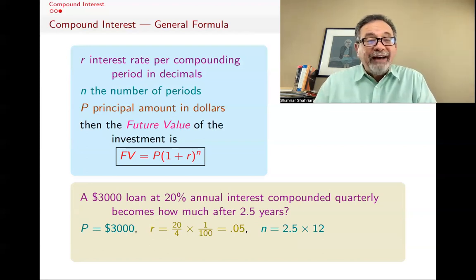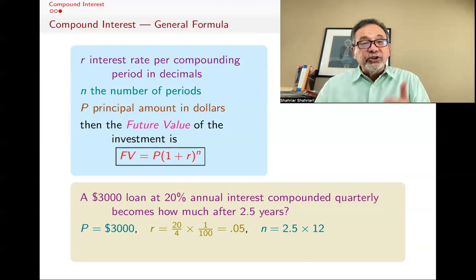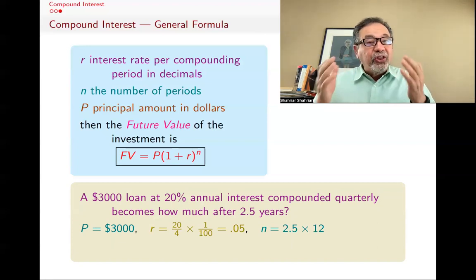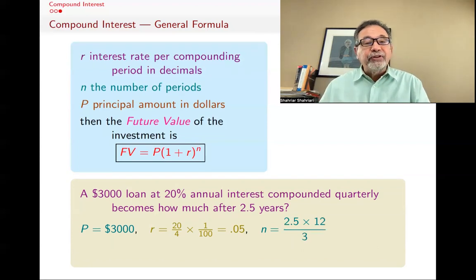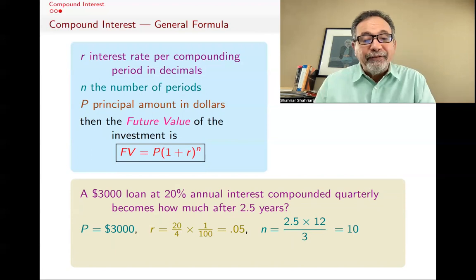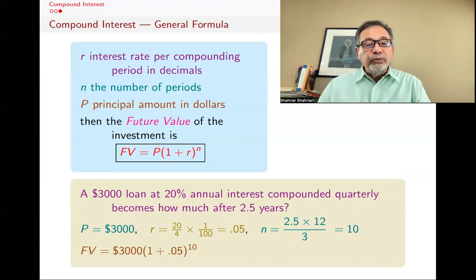And how many periods are there? There are two and a half years. Each year has 12 months, so two and a half times 12, that's how many months there are. But in a quarter, there are three months. So you have to divide by three, and you get 10. So there's 10 quarters in two and a half years.